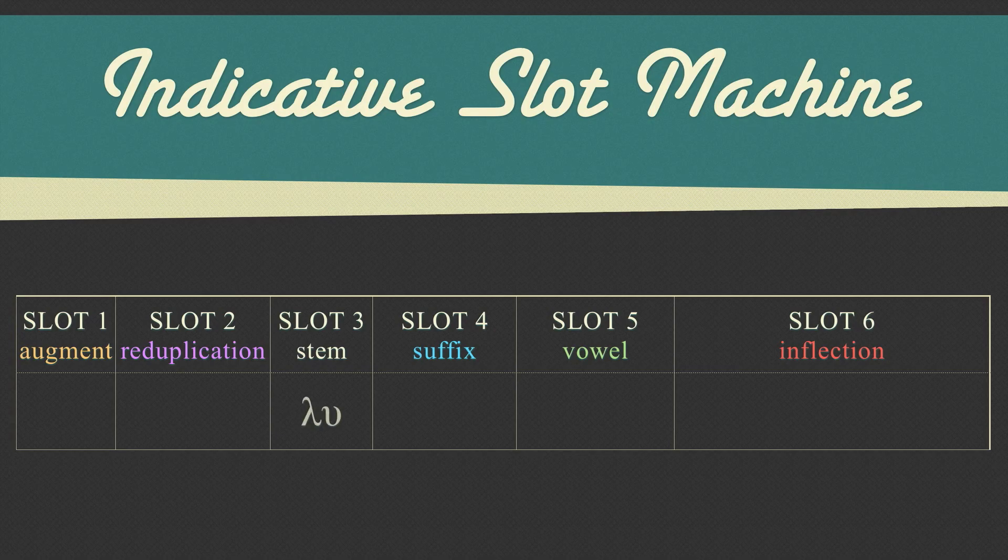Slot one is the augment. This is an epsilon added to the front of a word. Some tense and voice combinations have an epsilon. Some don't.